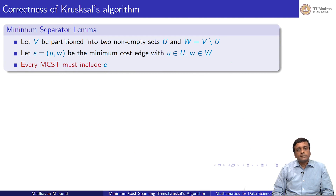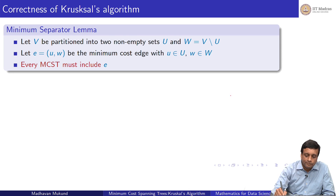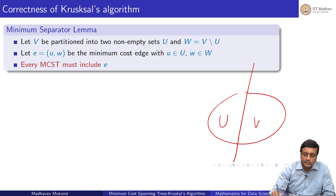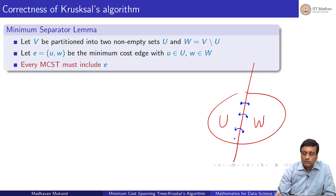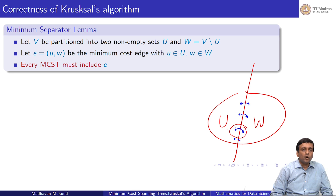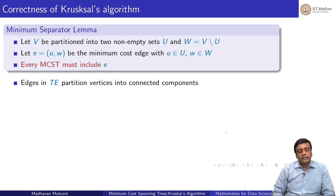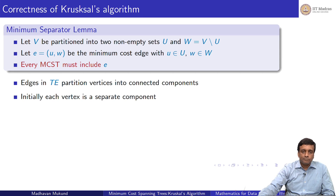Kruskal's algorithm is correct for exactly the same reason Prim's algorithm is correct: the minimum separator lemma. The lemma says: if I take my graph and split it so that there are some vertices on one side and some on the other — no matter how I partition into U and W — if I look at all edges which cross, the smallest one must belong to every MCST. In Kruskal's algorithm, the edges found so far partition the vertices into connected components. Initially each vertex is in a separate component, and when I add edge u–w it merges the components of u and w.